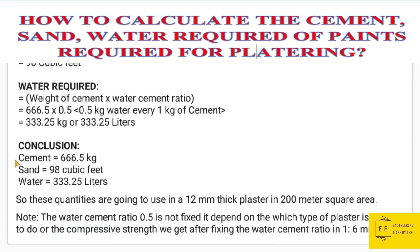So finally, the results for 12mm thick plaster over 200 square meters with water-cement ratio 0.5 are: cement required = 666.5 kg, sand required = 98 cubic feet, and water required = 333.25 liters. Note that the water-cement ratio of 0.5 is not fixed — it depends on the type of plaster and the compressive strength required for the 1:6 mixture. Thanks for watching this lecture, please stay tuned for the next.